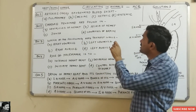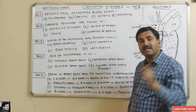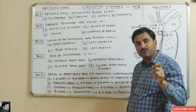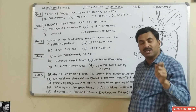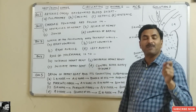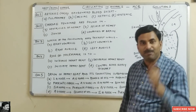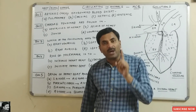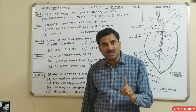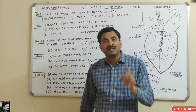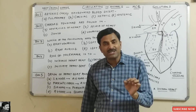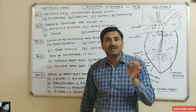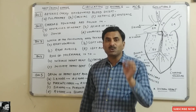Arteries carry oxygenated blood — except. As we know, arteries are meant for supplying oxygenated or pure blood from the heart to the body parts, but there is one artery which is an exception, carrying deoxygenated or impure blood instead of pure blood.